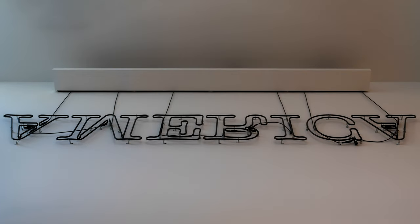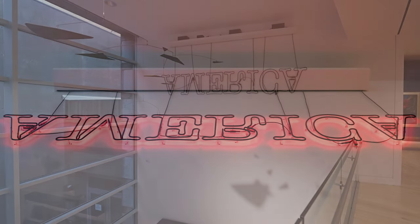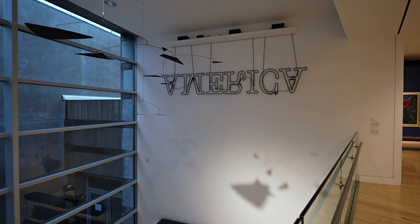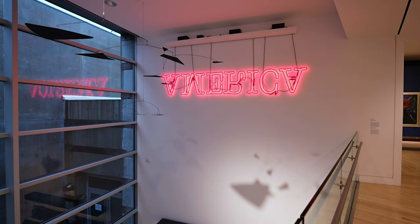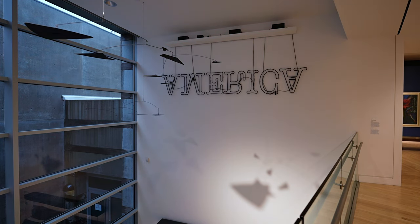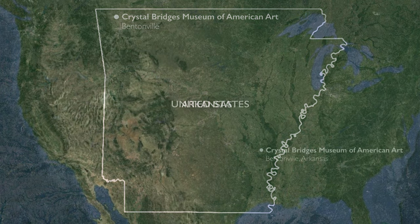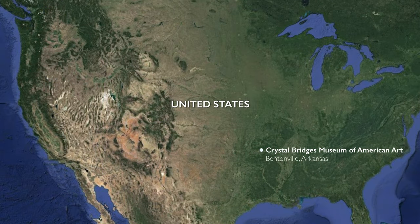From where we are standing, viewing the work from this low perspective, it very much feels as if America is toppling down. But also, what is this flickering, sort of obnoxious red neon trying to tell you? Is it a warning? Is it celebratory? And does it represent you in any way? Standing here in Arkansas, in the United States, America means the United States.